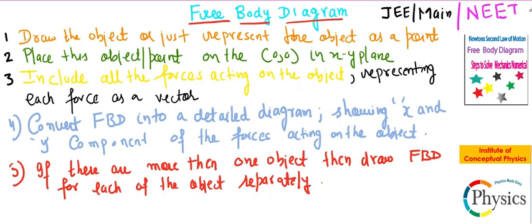Now the first step is to draw the object or just represent the object as a point. The second step is to ensure that you have a coordinate system like XY plane where you keep the object. Preferably we would like to keep the objects at the origin.